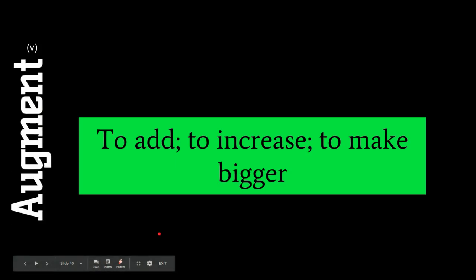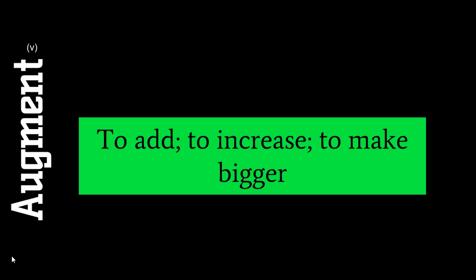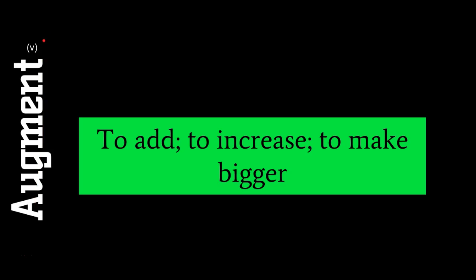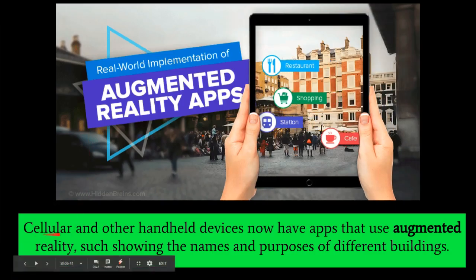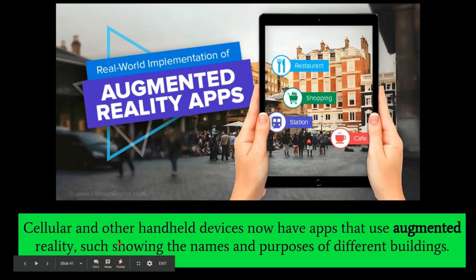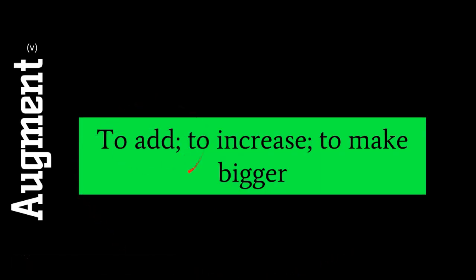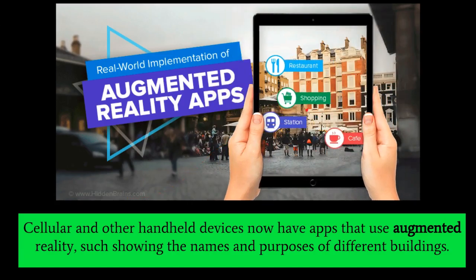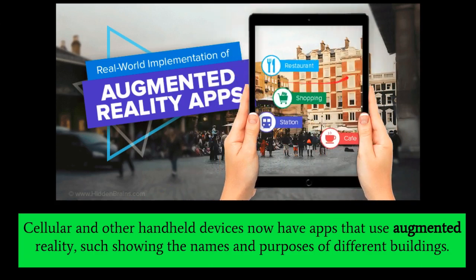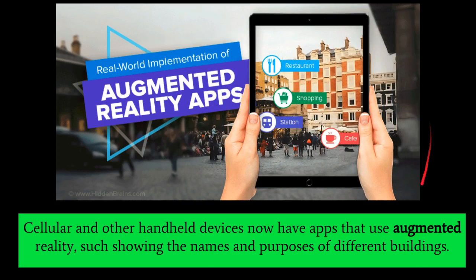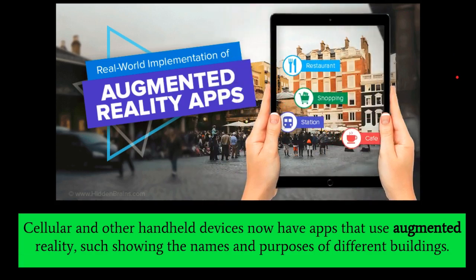Our next word is augment — you may remember a previous word, enhance, which used augment as a defining word. They are synonymous. Augment means to add, to increase, to make bigger, and is a verb. Cellular and other handheld devices now have apps that use augmented reality, showing the names and purposes of different buildings. When we hold iPads and iPhones up to the world, it adds images to it — that's why we call it augmented reality. You can also use augmented such as augmented lips, in which people make their lips bigger.